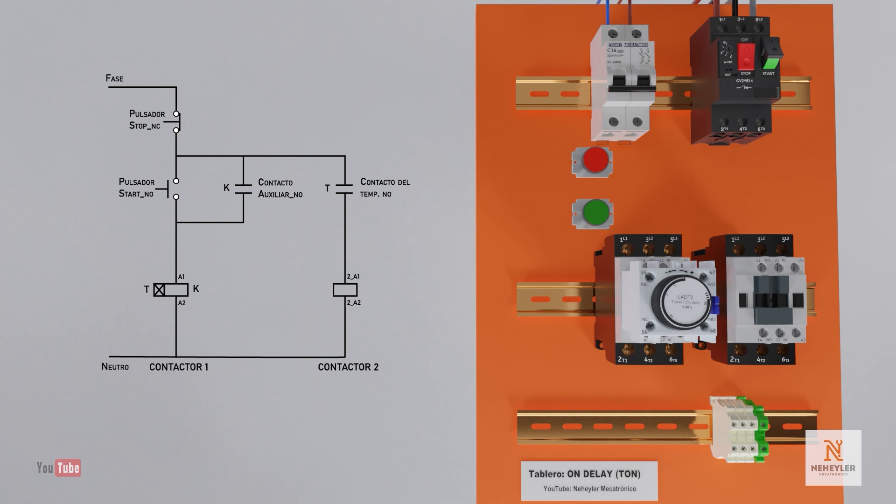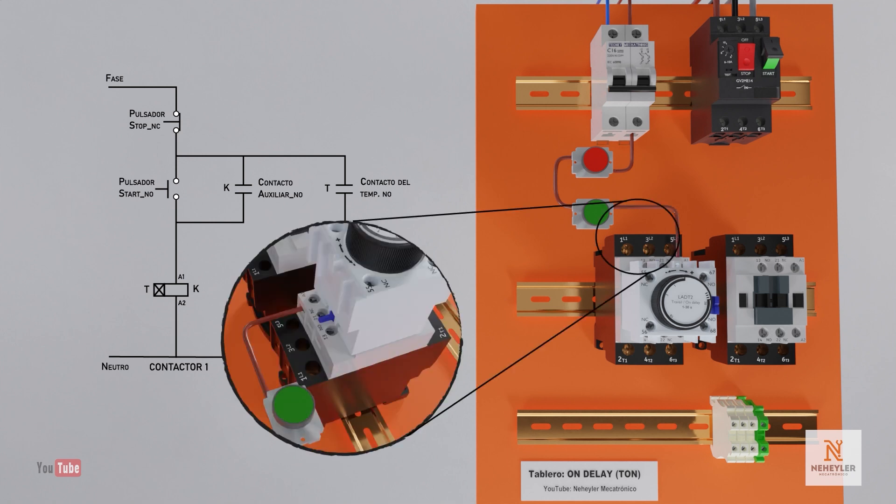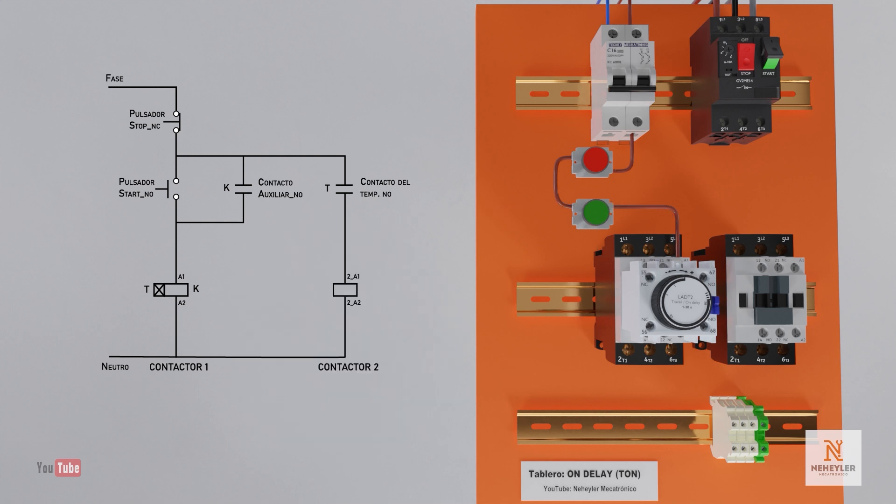From the phase, which in our case will be the brown cable, it is taken and connected to one end of the stop button. From the output at the other end it is taken and connected to the start button. And from the remaining terminal it is taken and connected to terminal A1 of the contactor coil. A cable is connected from output A2 and taken to the neutral terminal, which in our case will be the light blue cable.